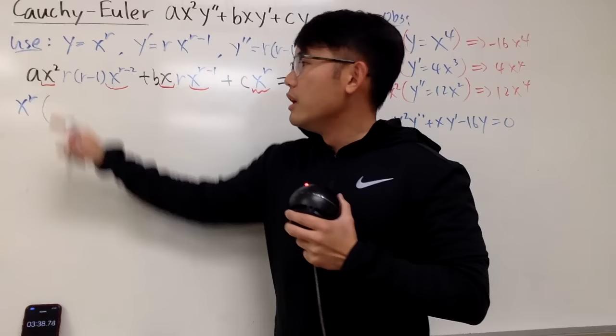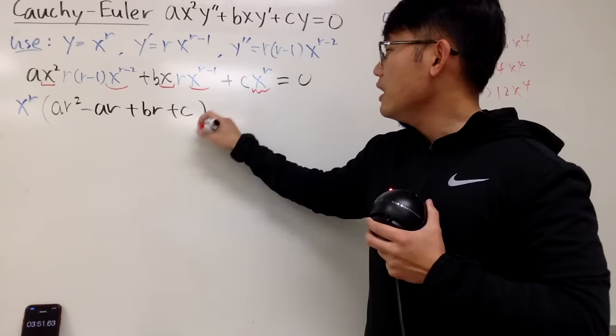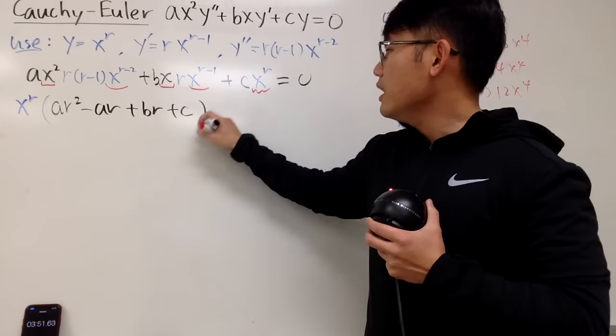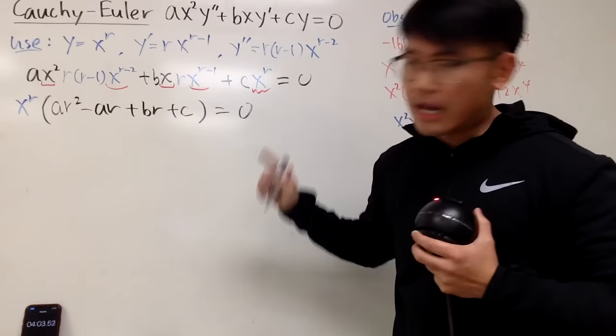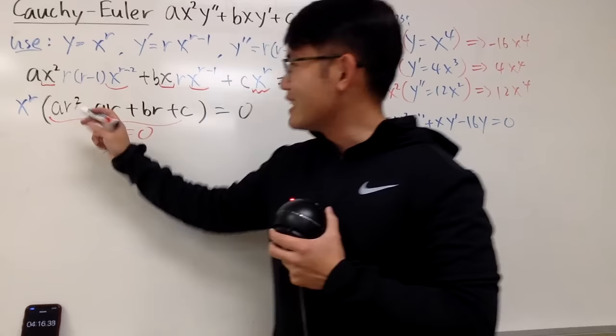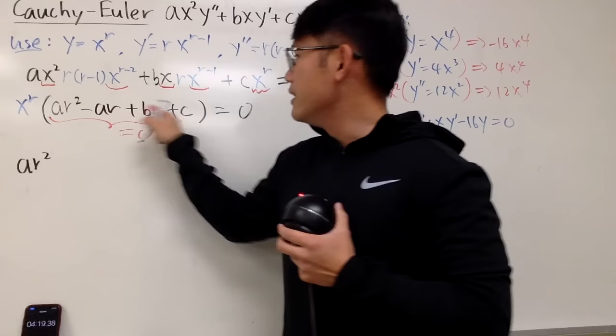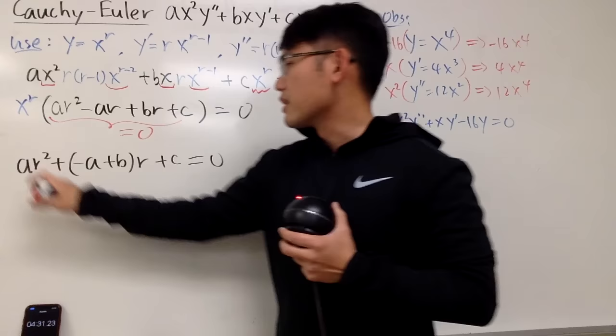After factoring out x^r, inside we have: ar² − ar + br + c = 0. Combining the r terms: ar² + (−a + b)r + c = 0. This is a condition on r that makes the differential equation true, and it's called the characteristic equation — a quadratic in r. We have three cases to study.